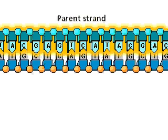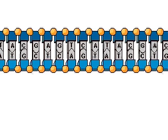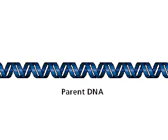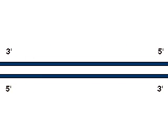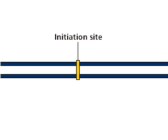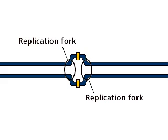So far, we have focused on the replication of only one portion of a parent strand. To show replication of both parent strands, we will demonstrate the process again, beginning with the parent DNA molecule. In this representation, the individual bases are not shown. For simplicity, we will again uncoil the parent DNA molecule. Arrows indicate the 5' to 3' direction of each strand. The two parent strands separate at the initiation site, creating two replication forks.